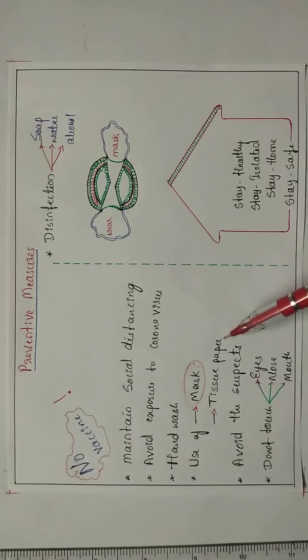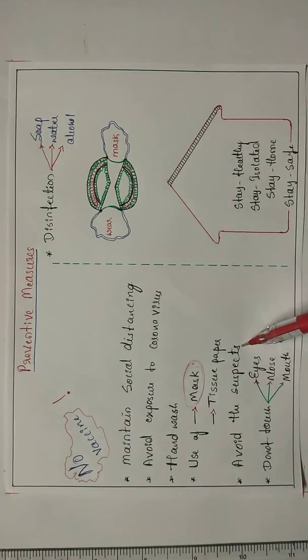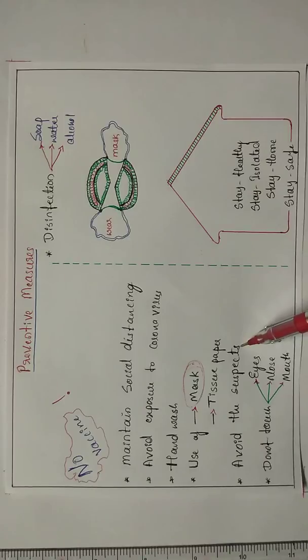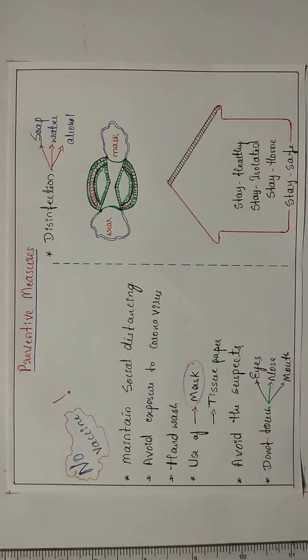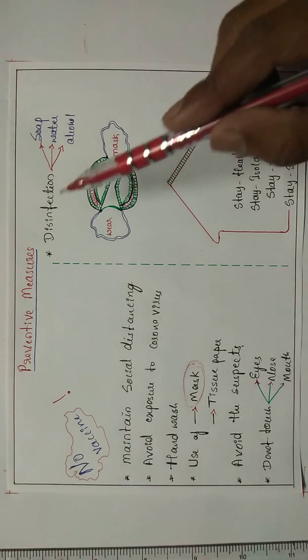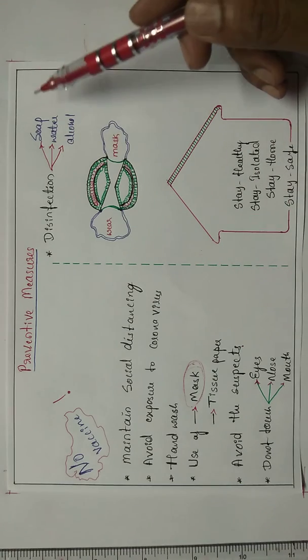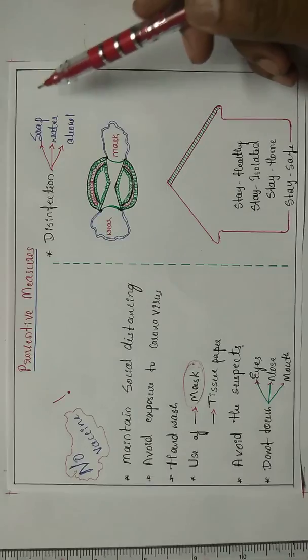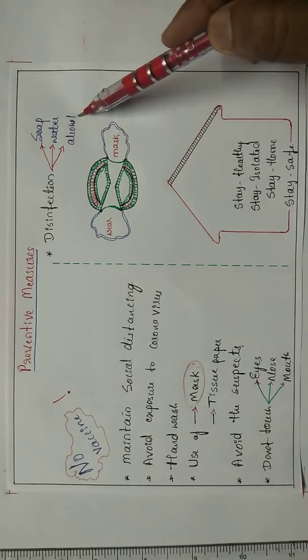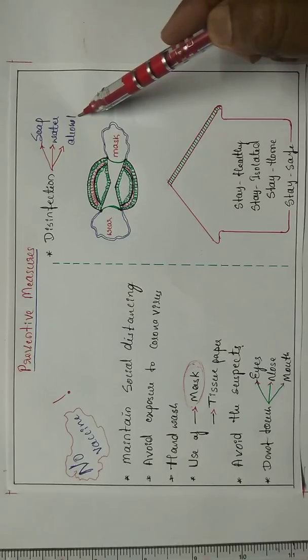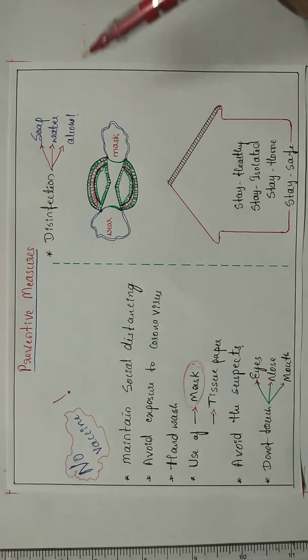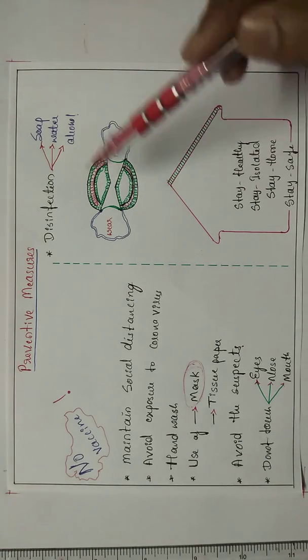We should avoid the suspects, any person coming from Dubai or any other countries. If we feel like he is infected, we should avoid him. We should not touch our eyes, nose, and mouth if our hands are not properly washed. We should not forget disinfection. Disinfection can be done by soaps, water, and alcohol-based disinfectants. And the last but not the least: wear mask, please wear mask.